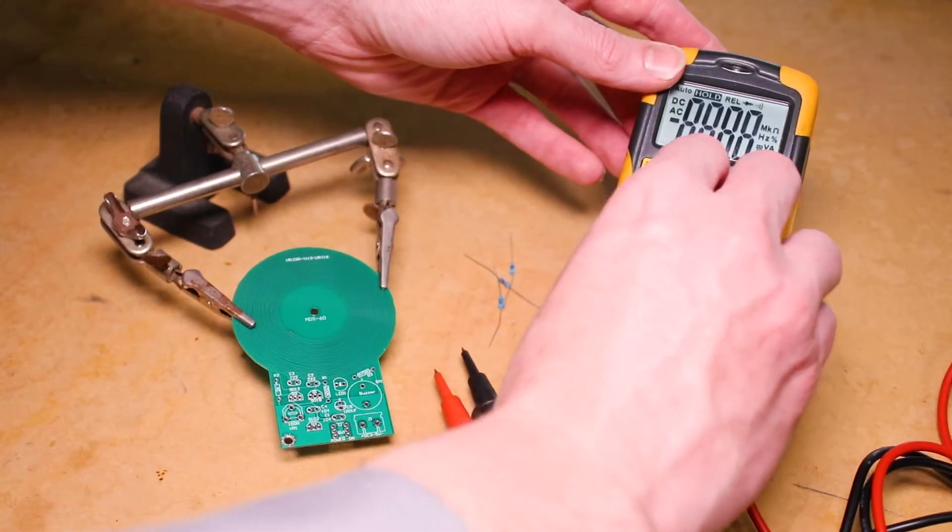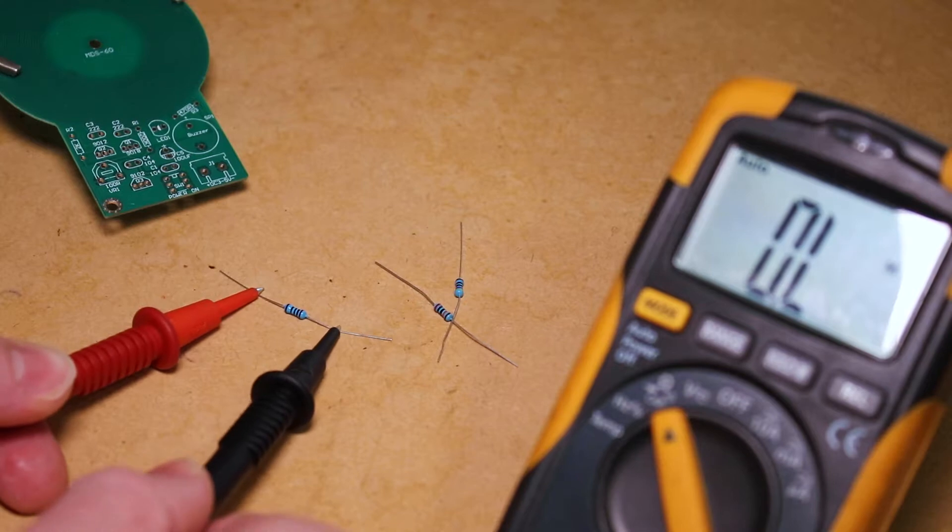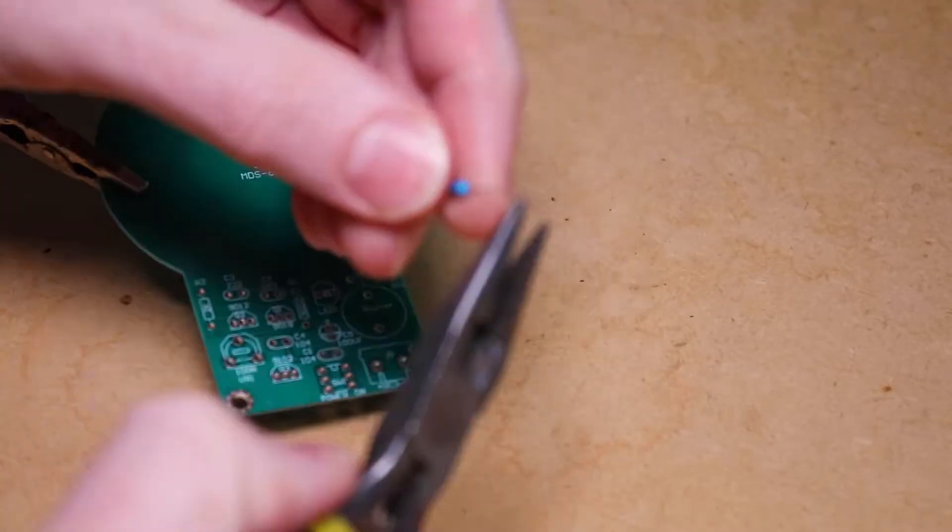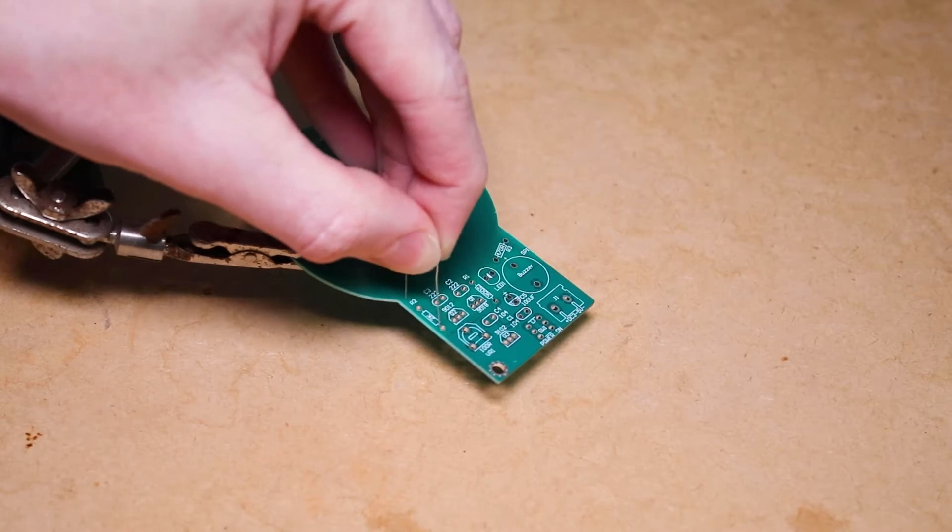To get started, we can determine the values of our resistors by either using the color code or with a multimeter before inserting them into the board and soldering them in place.